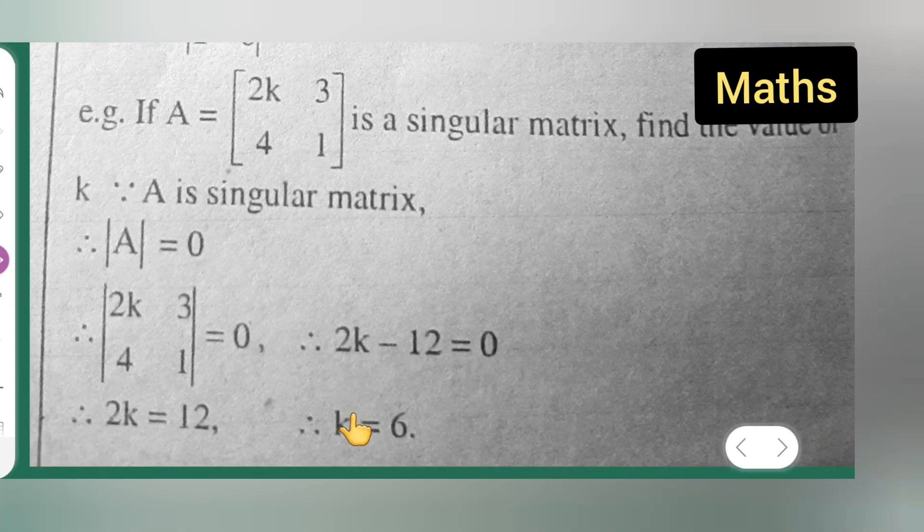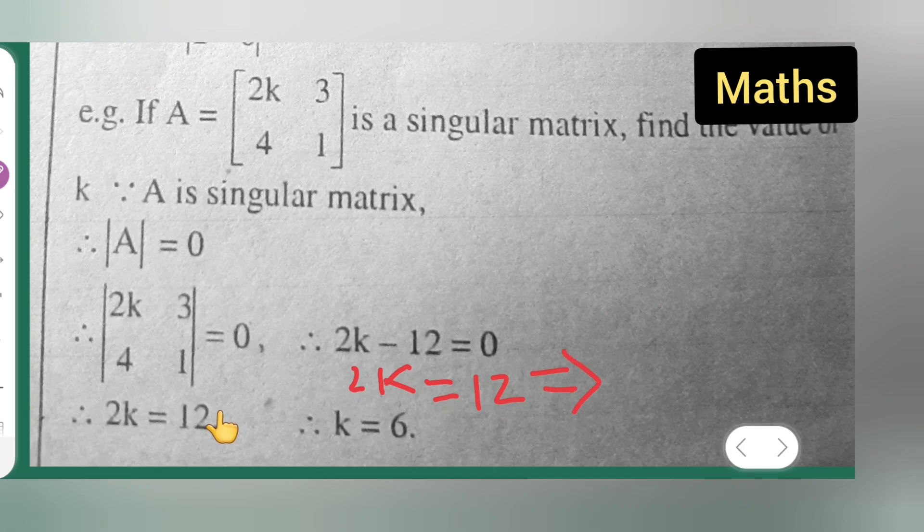Then what I will have to do is, take this 2k is equal to 12. What will happen over here? 2k is equal to 12. And now this implies that k is equal to 12 upon 2. 2 ones are 2, 6 are 12. So this is how you got the value of k.